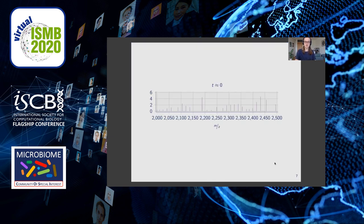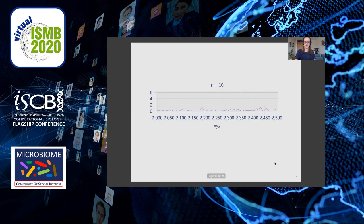This illustration shows the influence that the smoothing parameter T has on the feature map of a spectrum. When T is approximately zero, the raw spectrum is represented by a sum of Dirac functions. With increasing T, the Dirac functions get diffused and the spectrum becomes smoother. Thereby T controls the influence of single peaks, and due to the effect of large T on small peaks, the smoothing works as a noise reduction for the MALDI-TOF spectra, where small peaks are often due to noise in the detector.